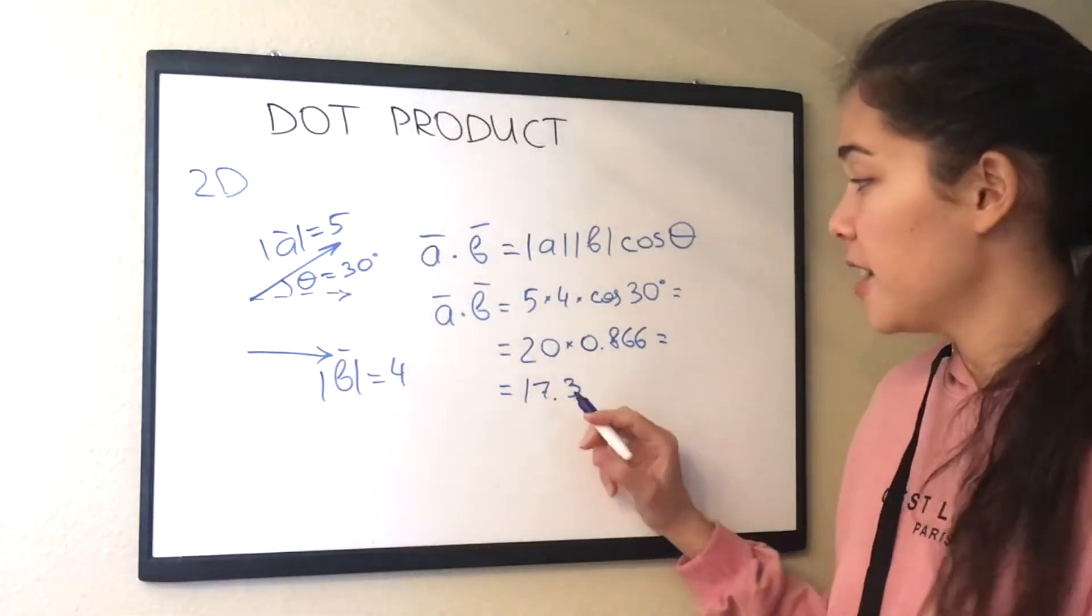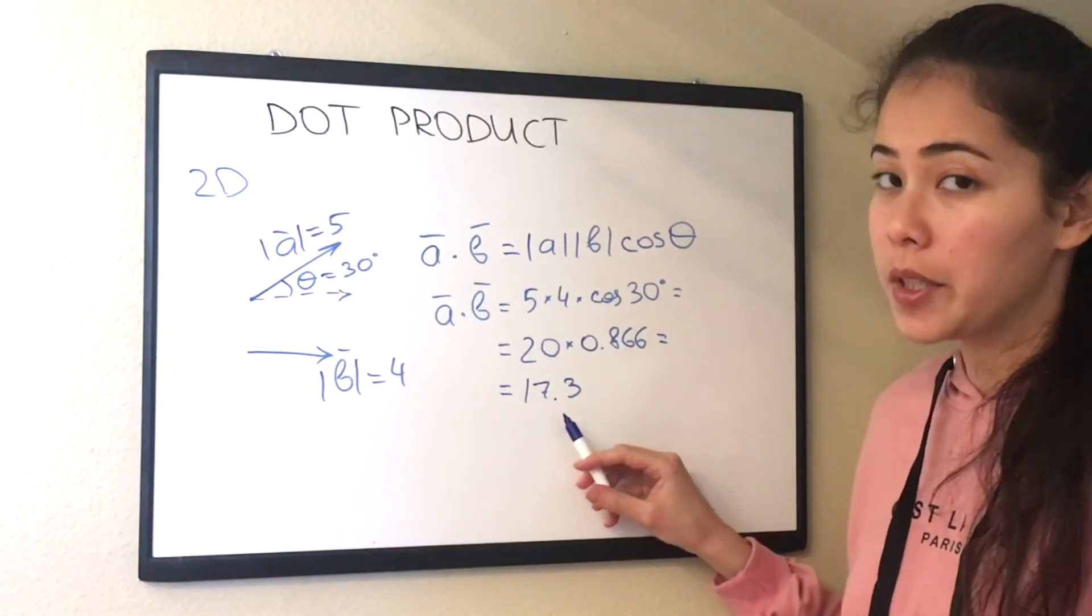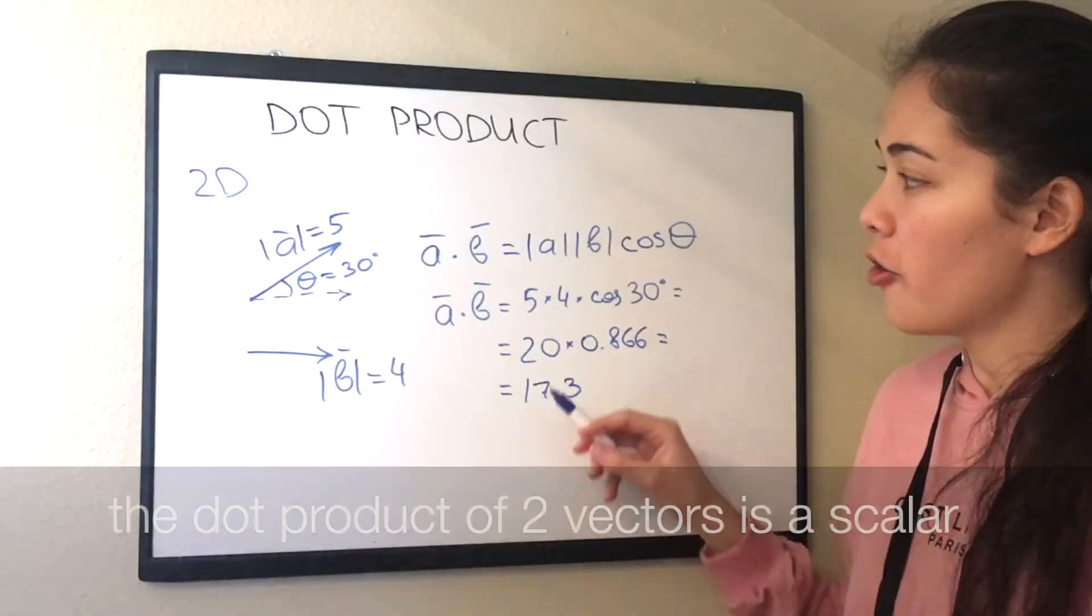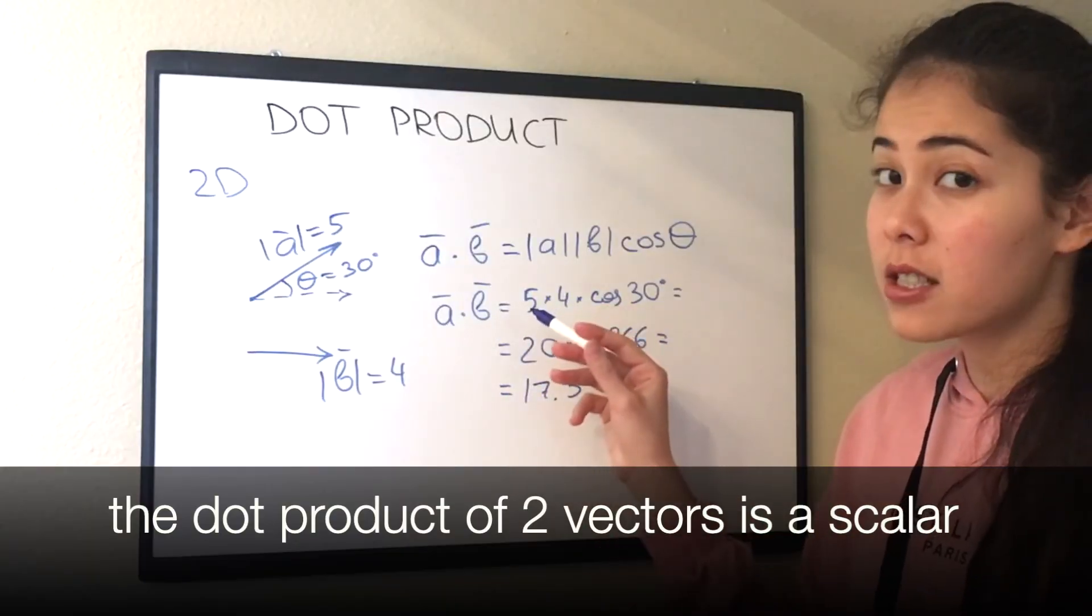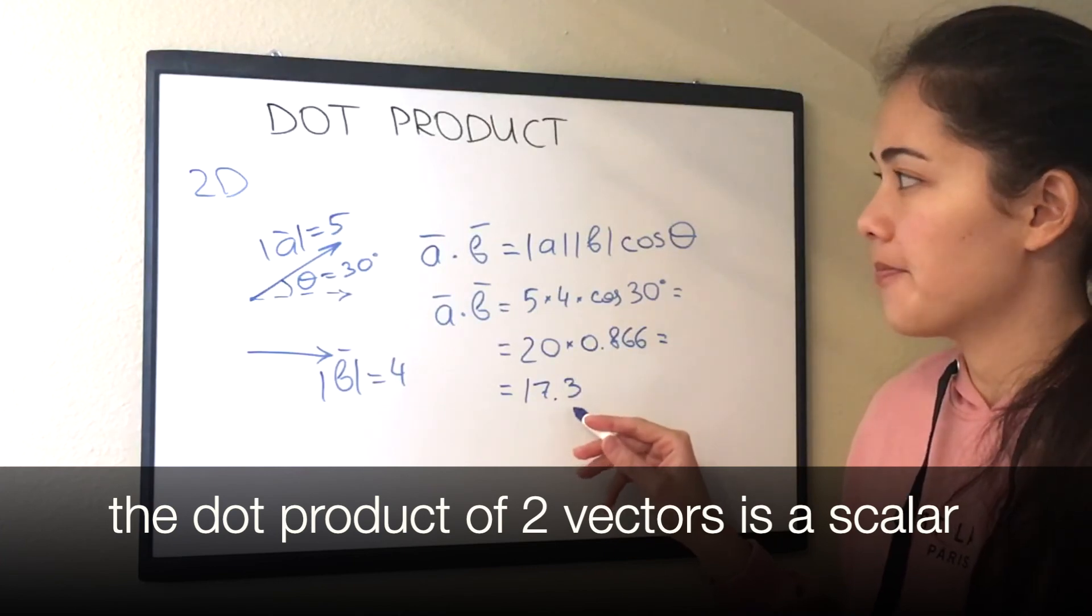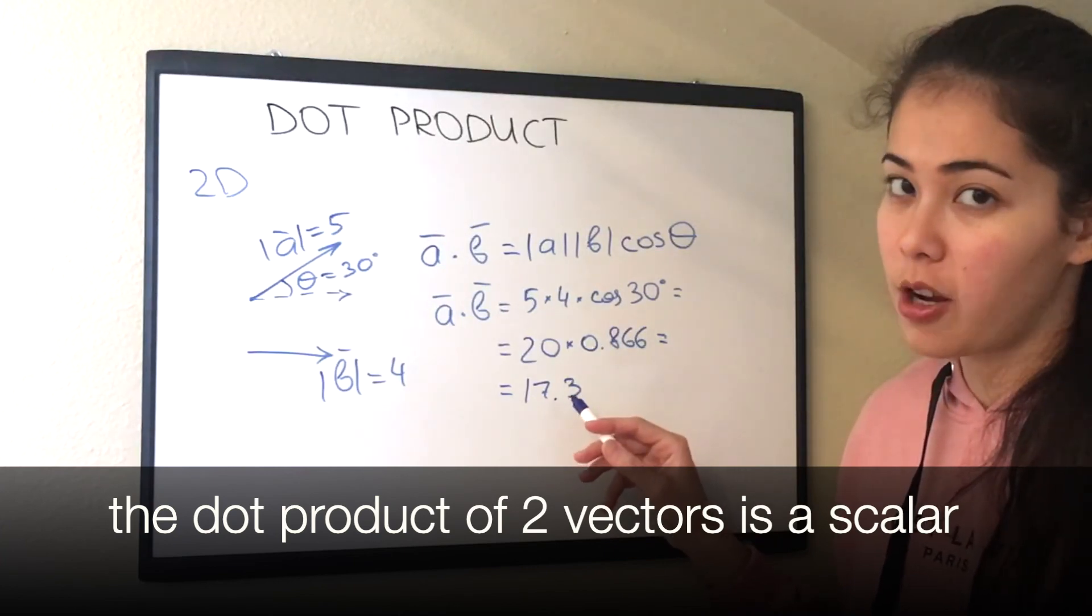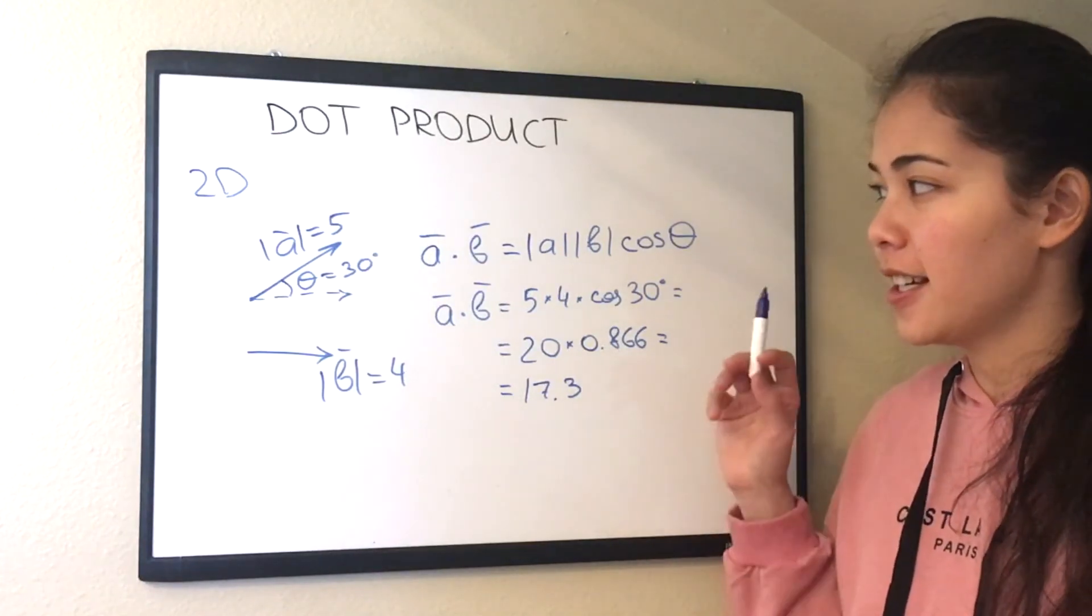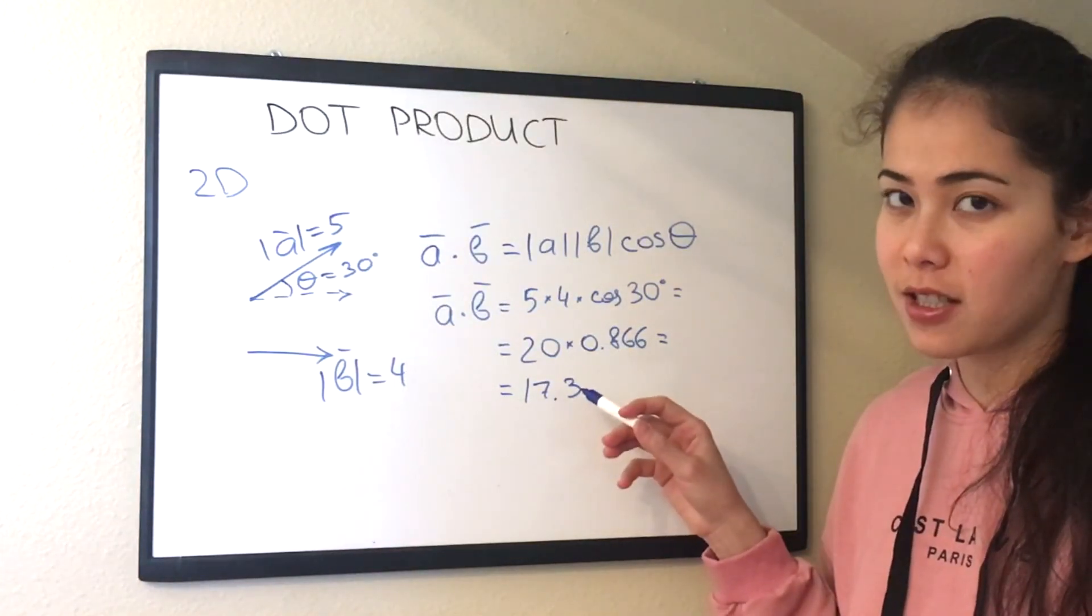And you see the dot product is just a number. So the dot product of two vectors is a scalar, it's not a vector. This is the first property of the dot product. Now in our case of the principle of continuity we had a little bit of a different situation.